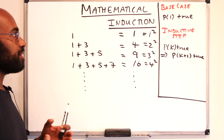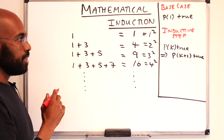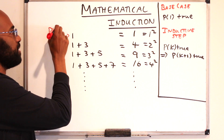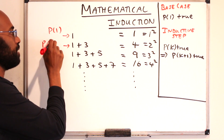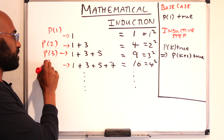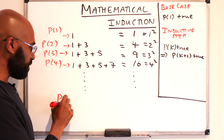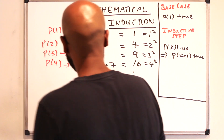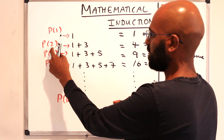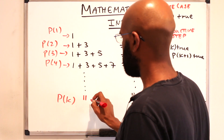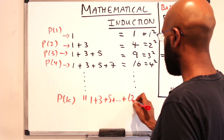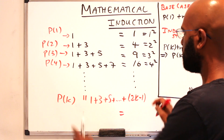We can use the process of mathematical induction to actually establish this. We'll think of each of these as an actual statement. This statement is p sub 1, here's our second statement that 1 plus 3 equals 2 squared, our third statement is here, our fourth statement is here. So what's our general statement pk? Looking at these numbers, the last number is twice the input value minus 1. So it looks like our statement is that 1 plus 3 plus 5 up to 2k minus 1 equals k squared.